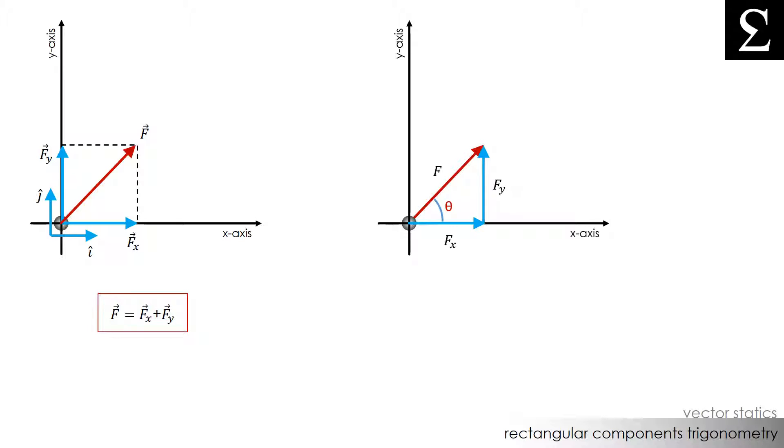We see by simple trigonometry that the magnitude of fx is simply the magnitude of f times the cosine of theta, and that the magnitude of fy is simply the magnitude of f times the sine of theta.